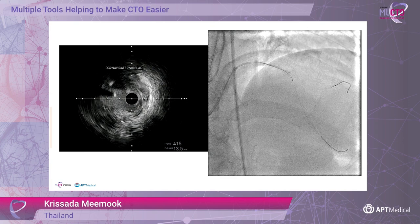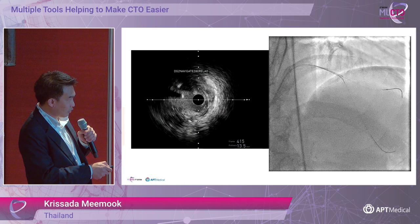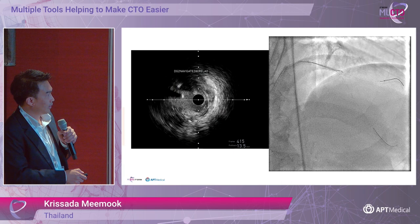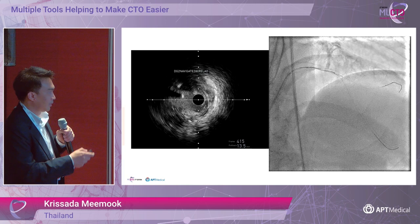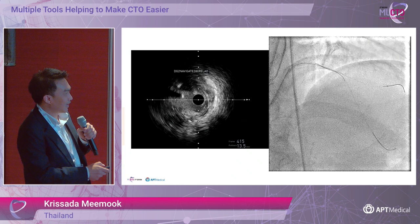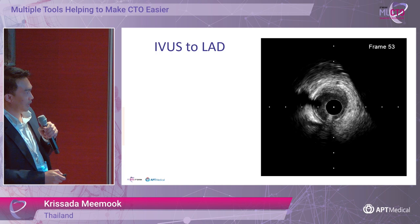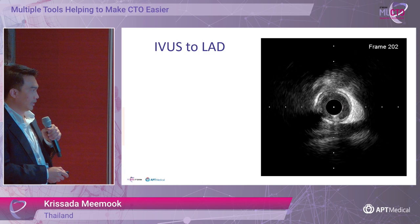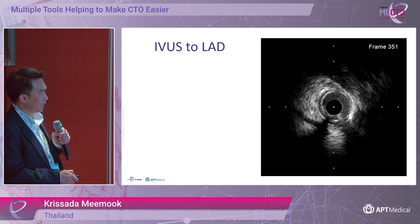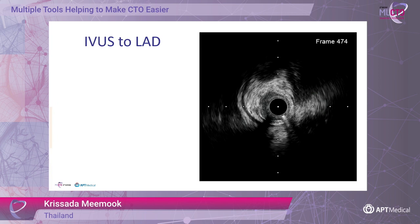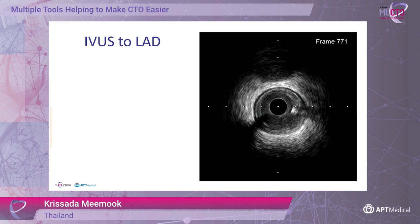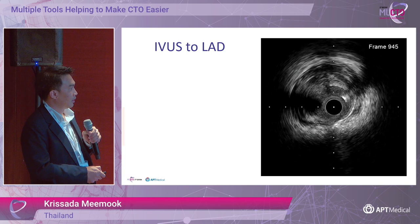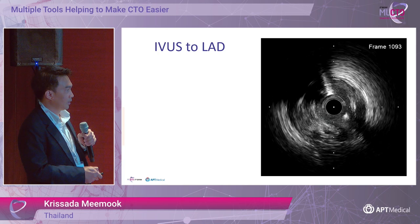You can see the wire movement as I tried to bring the Pilot 50 to the septal side of the LAD. Now we went to the septal side of the LAD — this is in the true lumen. We performed IVUS from the new wire, and you can see the distal LAD is in the true lumen. When we pull back to the mid-LAD, you can see the previous wire in the very large subintimal space, but the new wire is in the true lumen all the way from the distal LAD to the proximal LAD. Now the LAD wire is in the true lumen.